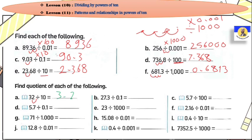27.3 divided by 0.1 — ما تنساش: divided by 0.1 يعني multiply by ten. يبقى move one digit to the right. So it will be 273.